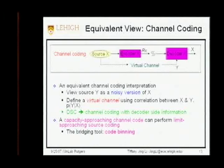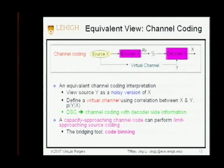We can define a virtual channel using the correlation between x and y, essentially like a binary symmetric channel with crossover probability p(y|x). Distributed source coding becomes a channel coding with decoder-side information problem. A capacity-approaching channel code on this BSC channel with crossover probability p(y|x) can essentially achieve the Slepian-Wolf limit. In other words, a good channel code is also a good source code — and the bridge tool is the so-called coset binning technology.